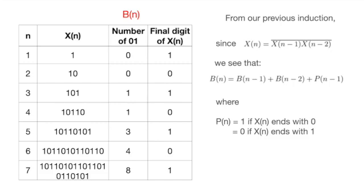we can see that the number of consecutive 01 for X(n) equals the number of consecutive 01 in X(n-1) plus X(n-2). And depending on the final digit of X(n-1), we might have another extra copy of 01.